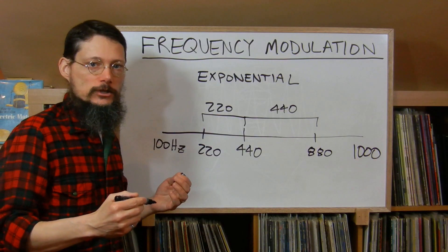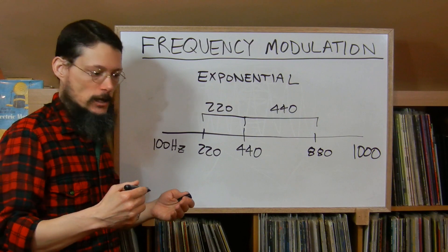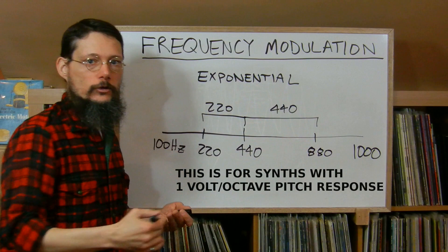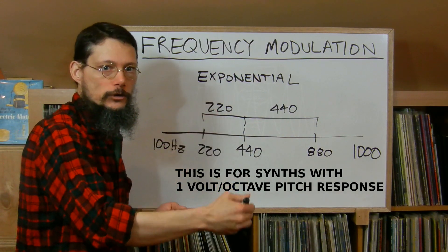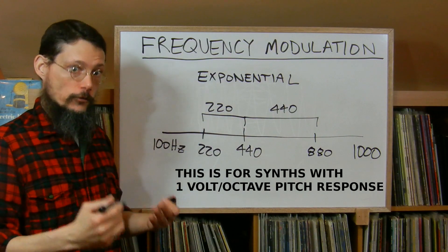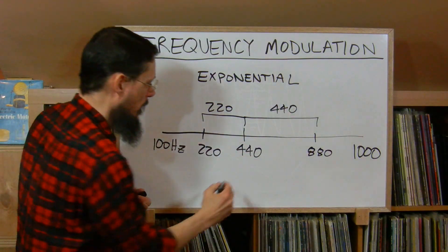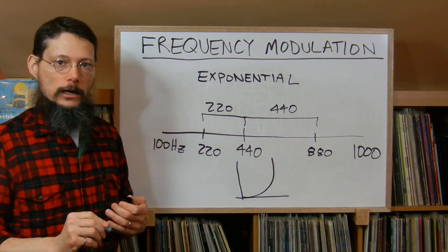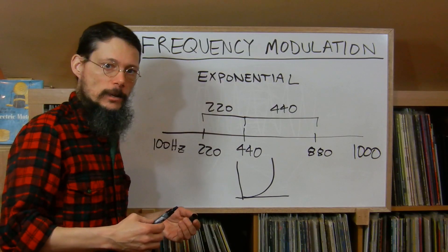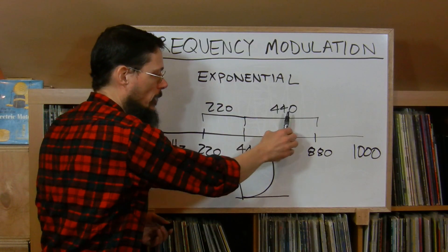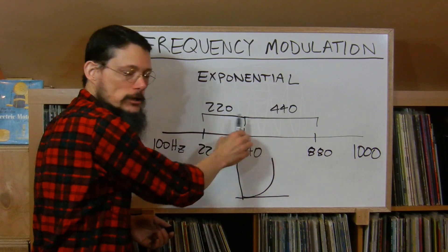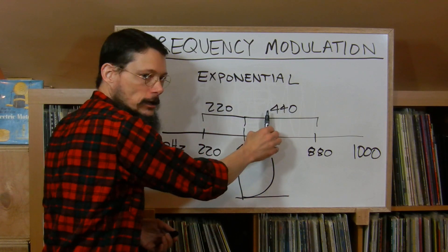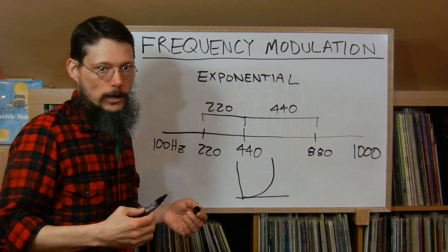The reason this is called exponential FM is because with an analog synth, to go up an octave you add one volt. To go up multiple octaves in a row, you go from one volt to two volts to three to four volts, even though the frequency is doubling each time. If you plotted voltage versus frequency, you'd get an exponential curve. So that begs the question — what would happen if you modulated up and down by the same number of hertz around the fundamental? Say 220 hertz down and 220 hertz up. Well, that's known as linear FM synthesis.